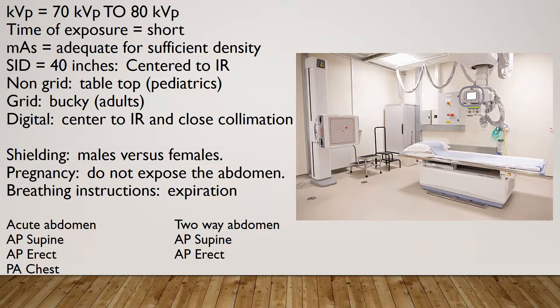Sometimes physicians will order what is called an acute abdomen, which means you take an AP supine abdomen, an AP erect abdomen, and a PA chest. If the physician orders a two-way or two-view abdomen, then you want to position the patient for an AP supine abdomen and an AP erect abdomen.